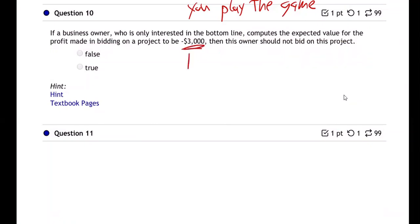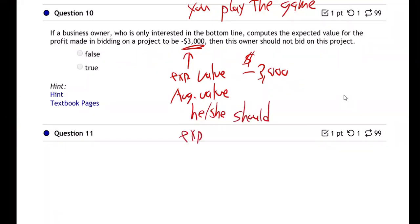In other words, they're saying if the expected value of this project is negative $3,000, that means that's the average value he or she should expect to get. That's what expected value means.